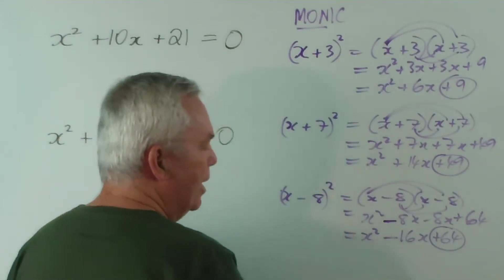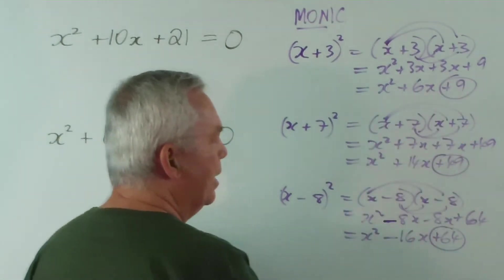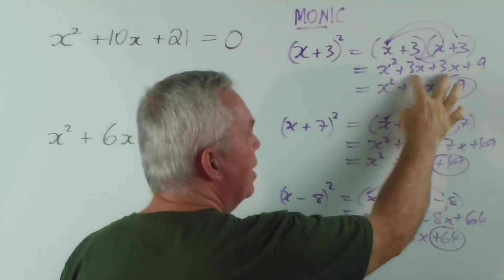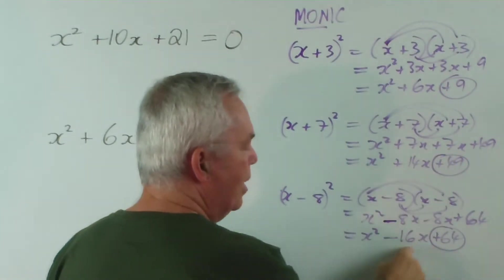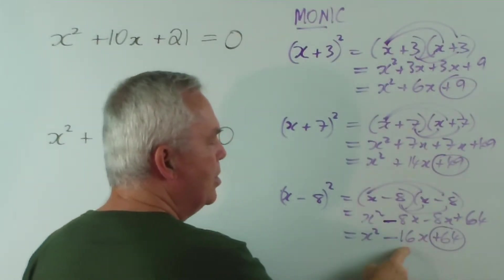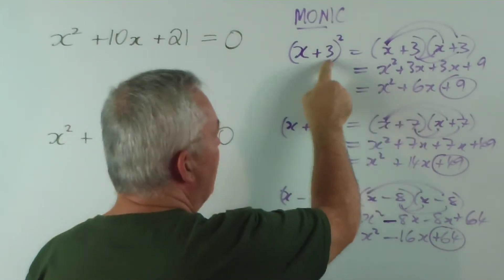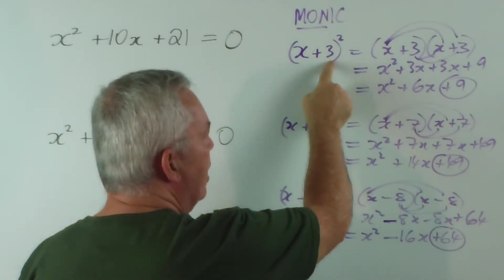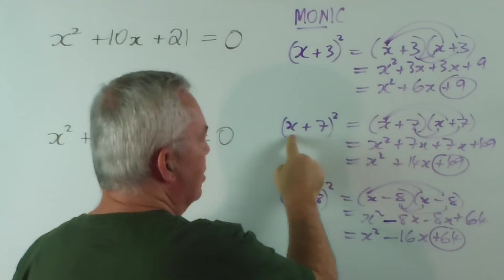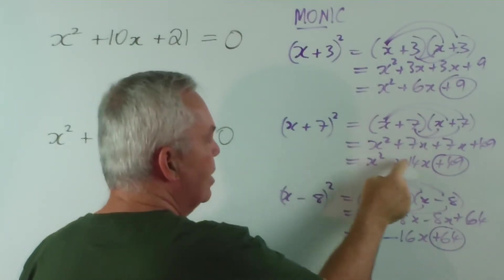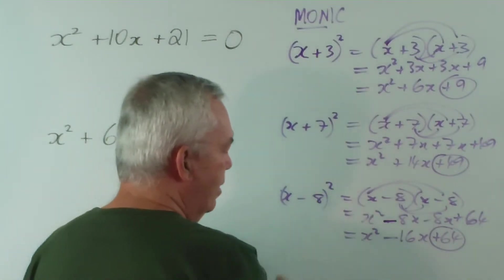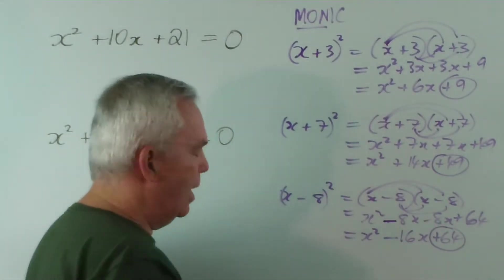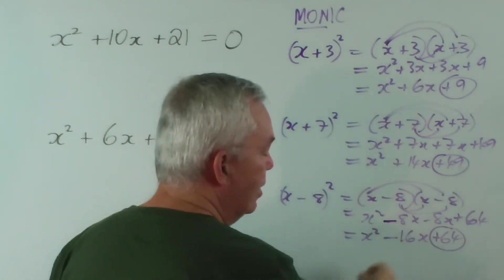So, x² at the beginning, perfect square at the end. And notice what we have in the middle - in every single occasion we have the same term twice in the middle that have to be added together. So what we have in the middle is double something. In fact, in the first one, if we multiply 3 by x and get 3x, we have 6x. 7 times x is 7x, double it is 14. And minus 8, or negative 8 times x - let's call it negative 8x - double it is negative 16x.